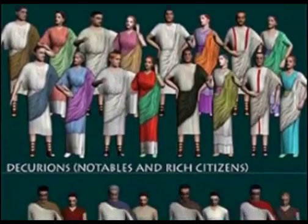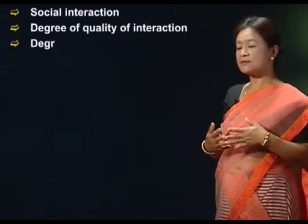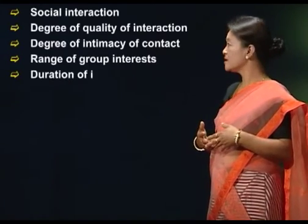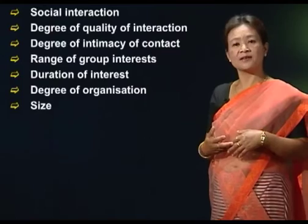Sometimes the purpose for which a group was formed also gets changed and new changes are brought into the group to allow flexibility. The size of a group also changes due to circumstances. A society is made up of various types of groups which are similar or different from each other. Classification of these groups can be done on the basis of social interaction, degree of quality of interaction, degree of intimacy of contact, range of group interests, duration of interest, degree of organization, and lastly size.